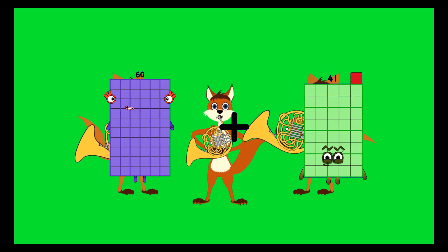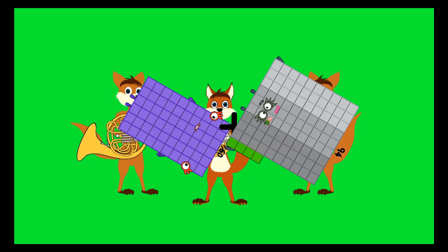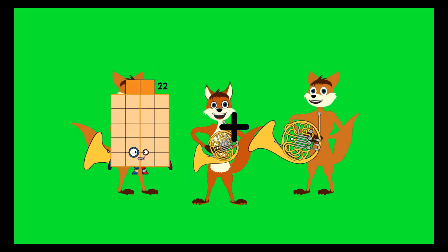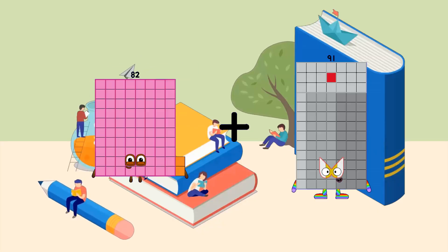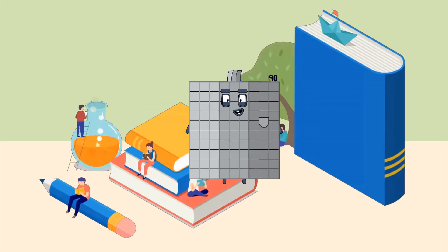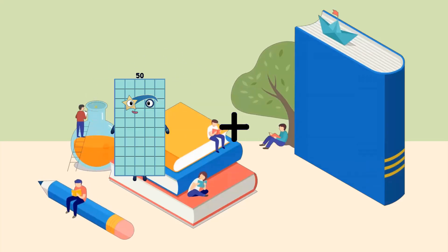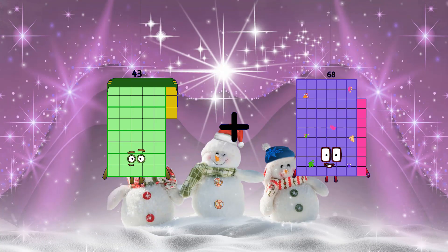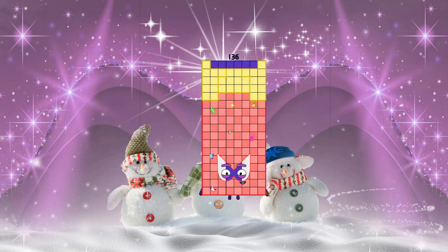60 plus 94 equals 154. 82 plus 80 equals 90. 43 plus 93 equals 136. 71 plus 17 equals 88.